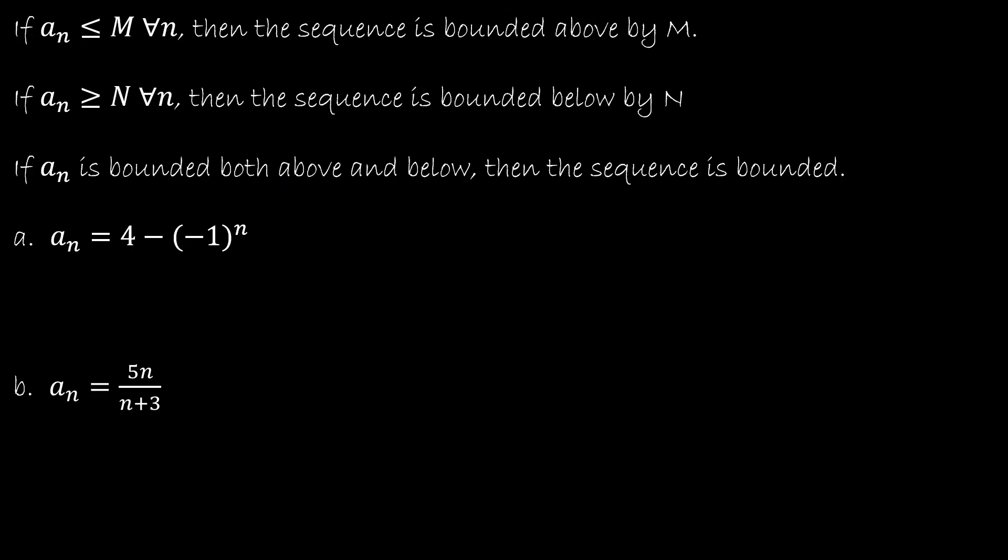Now that we have talked about monotonic, let's talk about bounded. If we have some value of M that is greater than or equal to all values of my sequence, and that's all this guy means, is for all n, means for every a₁, a₂, all the way through aₙ, if each of those values is less than or equal to M, then the sequence is bounded above by M. If every value is greater than some arbitrary value of N, then the sequence is bounded below by N. If it's both bounded above and below, then it's considered bounded.